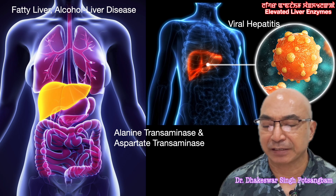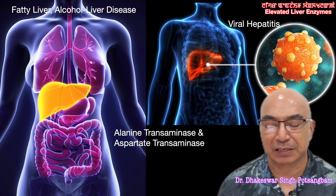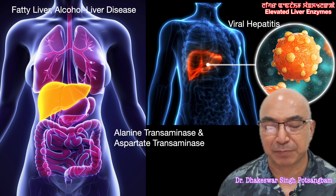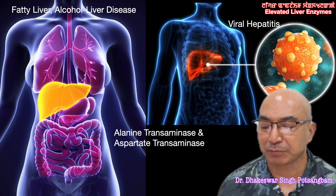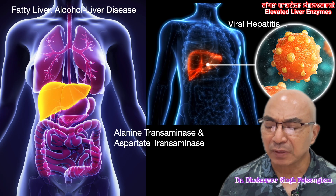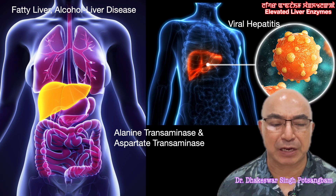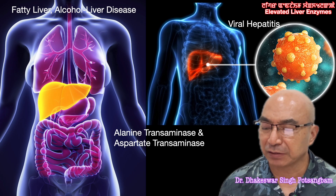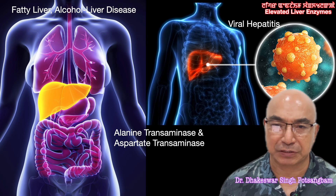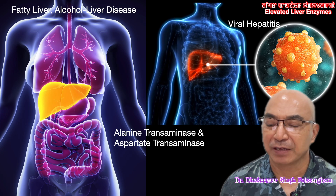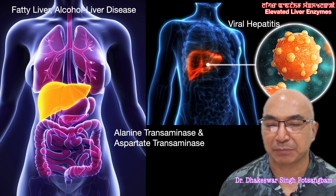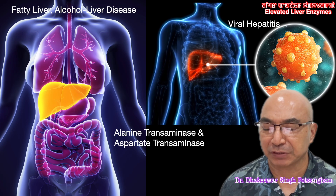ALT is alanine transaminase. AST is aspartate transaminase. These are the key liver enzyme markers we look at in liver function testing.